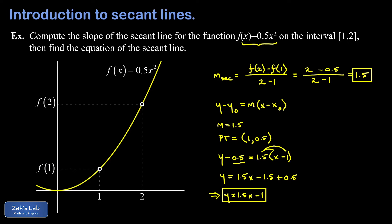We verify this by plugging the formula into our plotting software. When we do that, we see that the line does pass through the two points given on the function, confirming it's the correct equation of the secant line.